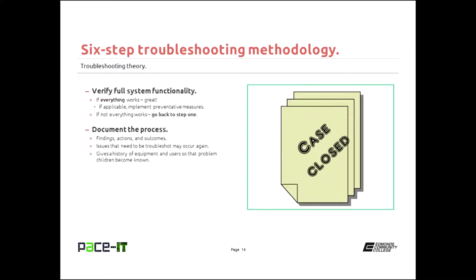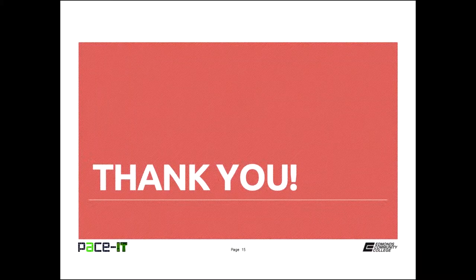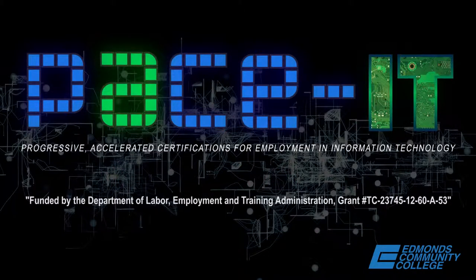That is the six-step troubleshooting theory recommended by CompTIA. To recap: step one, identify the problem; step two, establish a theory of probable cause; step three, test the theory of probable cause; step four, develop an action plan and implement it; step five, verify complete system functionality; and step six, document everything. Thank you for watching this webinar — I hope you found it informative. If you have any questions, feel free to contact me.